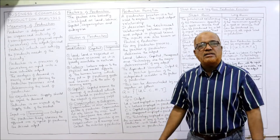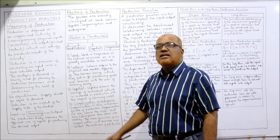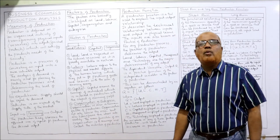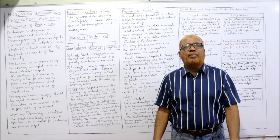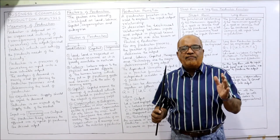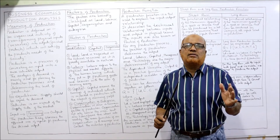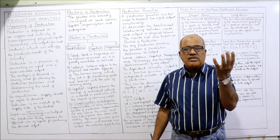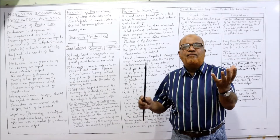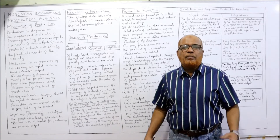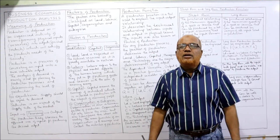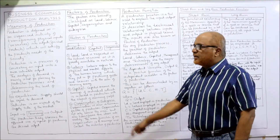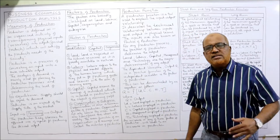The production theory stresses the efficient use of inputs for producing the desired output. The objective of production is the efficient utilization of all resources. Production is nothing but efficient and effective utilization of all resources in order to produce a desired level of output. That is the meaning of the term production.